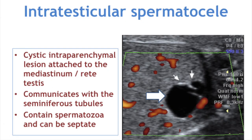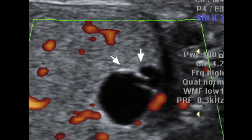Intratesticular spermatoceles are intraparenchymal cystic lesions seen near the mediastinum and rete testis. These cysts usually communicate with the seminiferous tubules and contain internal echoes and spermatozoa — hence called intratesticular spermatoceles. Mostly spermatoceles are extratesticular and located in the head of the epididymis, but sometimes they extend within the parenchyma of the testis and can be unilocular or septate. A transverse scan shows a well-defined cystic lesion in the region of the mediastinum testis.